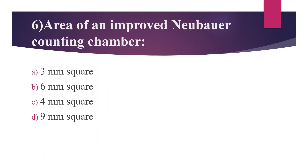Sixth Question: Area of an improved Neubauer counting chamber. Option A: 3 mm square. Option B: 6 mm square. Option C: 4 mm square. Option D: 9 mm square. Answer is Option D, 9 mm square. The counting chamber is also known as a Hemocytometer, used for blood cell counting.